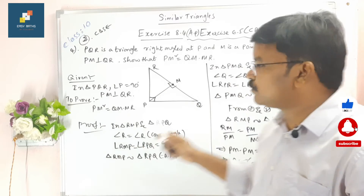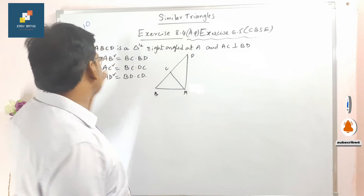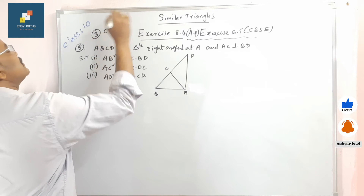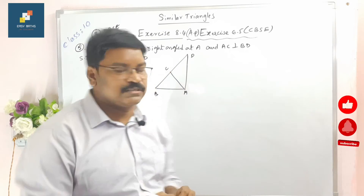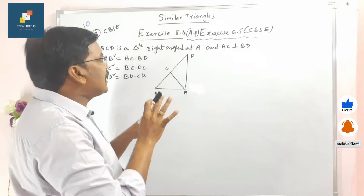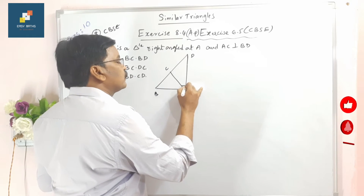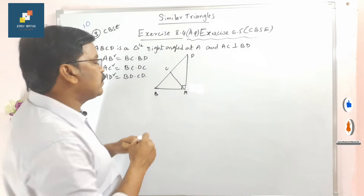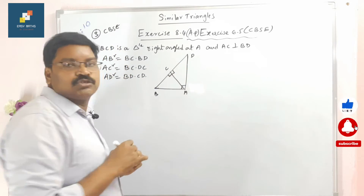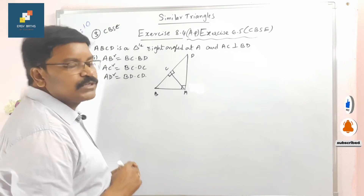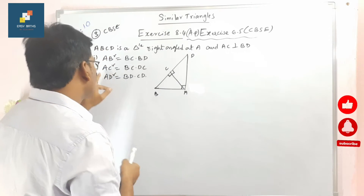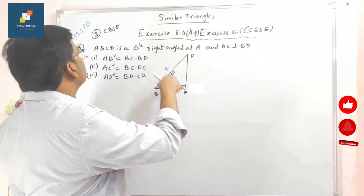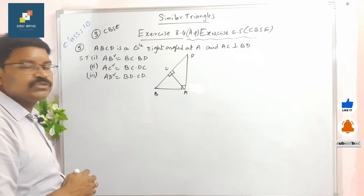This is the third question for CBSE students in exercise 6.5. Triangle ABC is right angled at A, and AC is perpendicular to BD. We have to prove: first, AB squared equals BC into BD; second, AC squared equals BC into DC; and third, AD squared equals BD into CD.